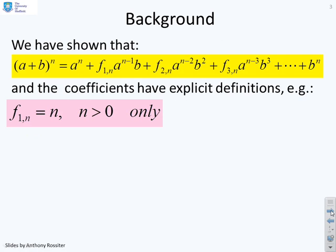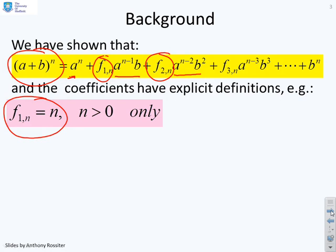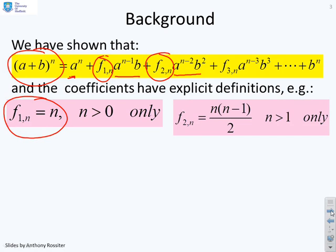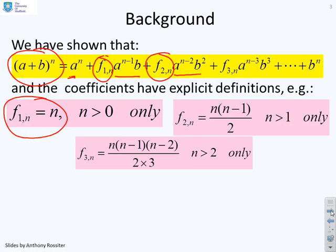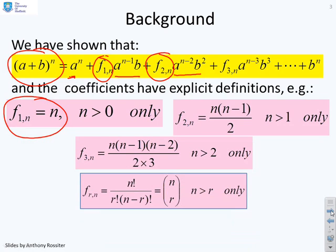The key formula: a general expansion for a binomial expansion is A plus B to the N equals A to the N plus some coefficient times A to the N minus 1 times B, plus another coefficient times A to the N minus 2 times B squared, and so on. The coefficients are well known: F1N equals N; F2N equals N(N-1) over 2; F3N equals N(N-1)(N-2) over 6, and so on.